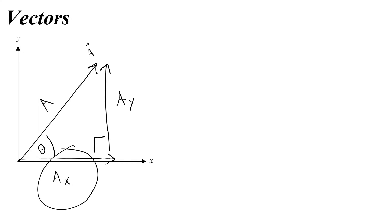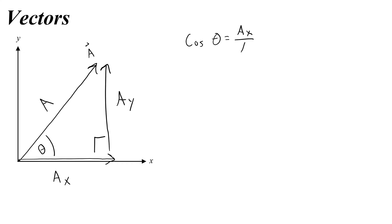Let's start by looking at ax. ax is adjacent to the angle theta, so we can say that cosine theta equals adjacent over hypotenuse, or in this case, ax over a — the x component over the magnitude. Then if I multiply both sides by the magnitude, I get an equation for ax: ax equals a cosine theta.